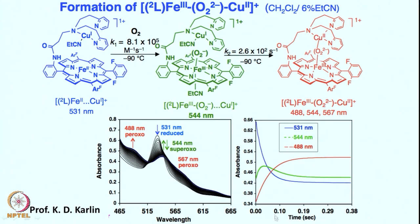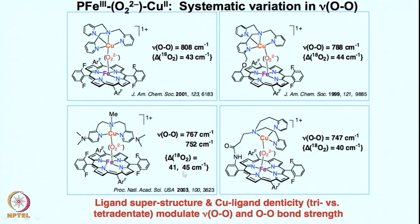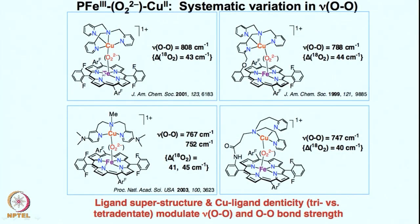Overall, a new iron(III)-copper(II) peroxo species is forming, which can also be followed by UV-vis and other spectroscopic techniques. Irrespective of what we do, in all cases it is an iron-copper heterodinuclear peroxo species. There is no homonuclear peroxo species forming between two copper centers — irrespective of whether it is tethered or not tethered, you have a peroxo species forming between iron and copper.